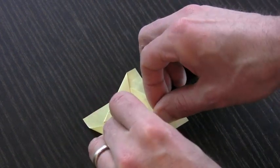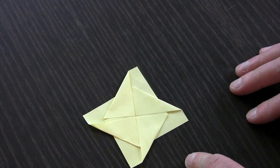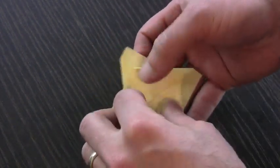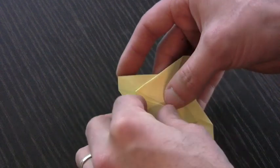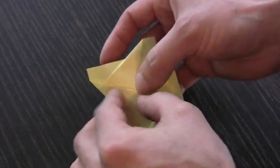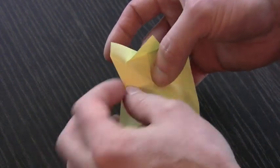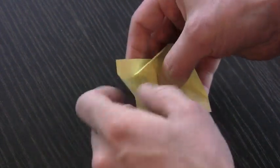Once they are all folded down, we're going to unstick each of the flaps. Just peel the first flap back, then the second, and work your way around until all four flaps are free of the sticky.